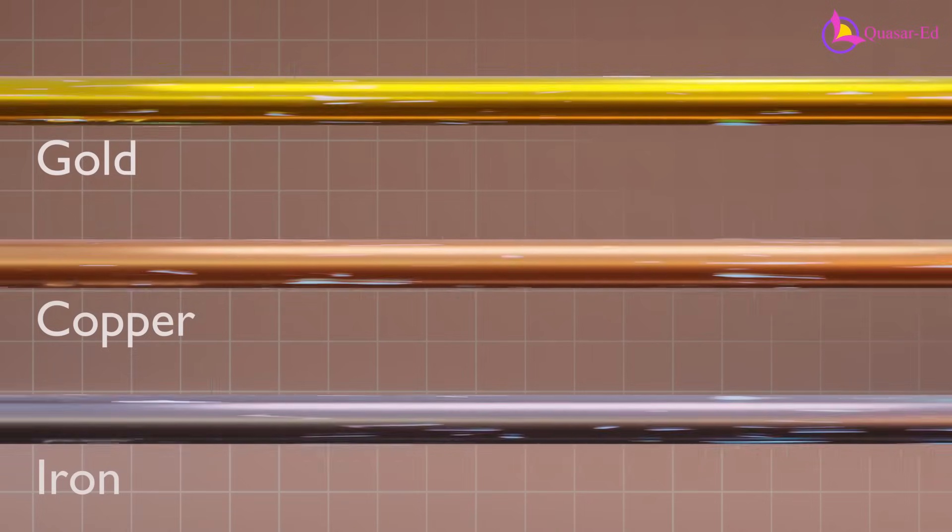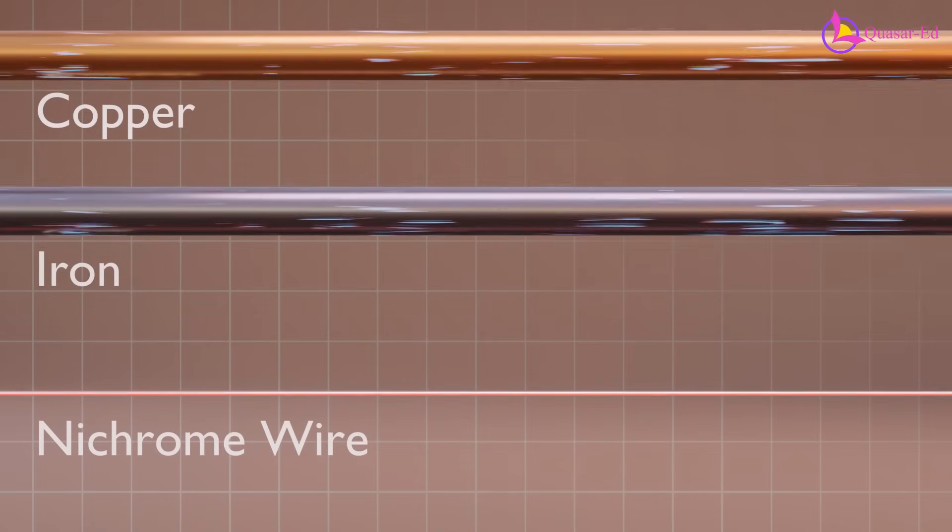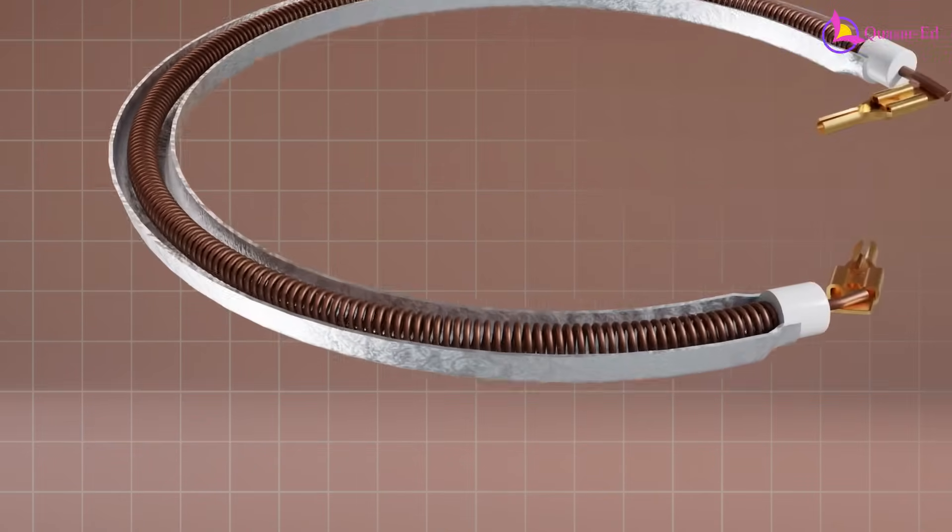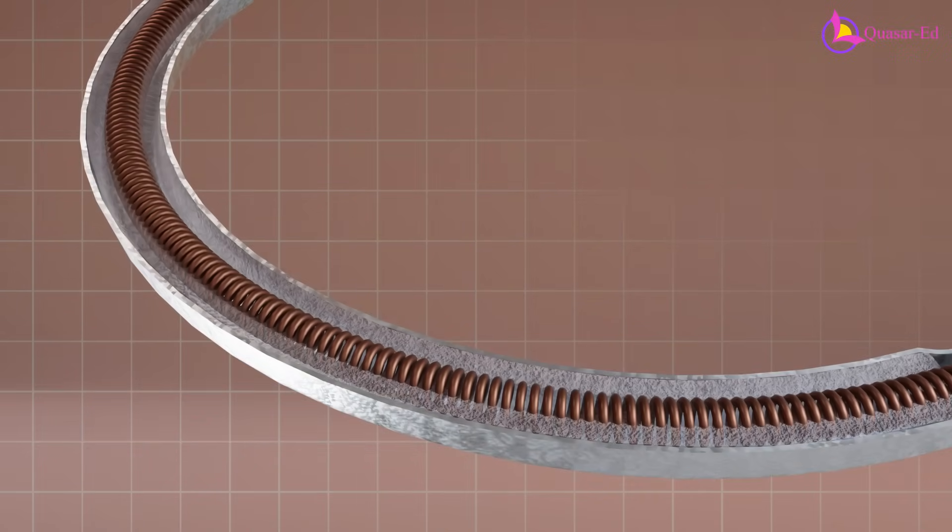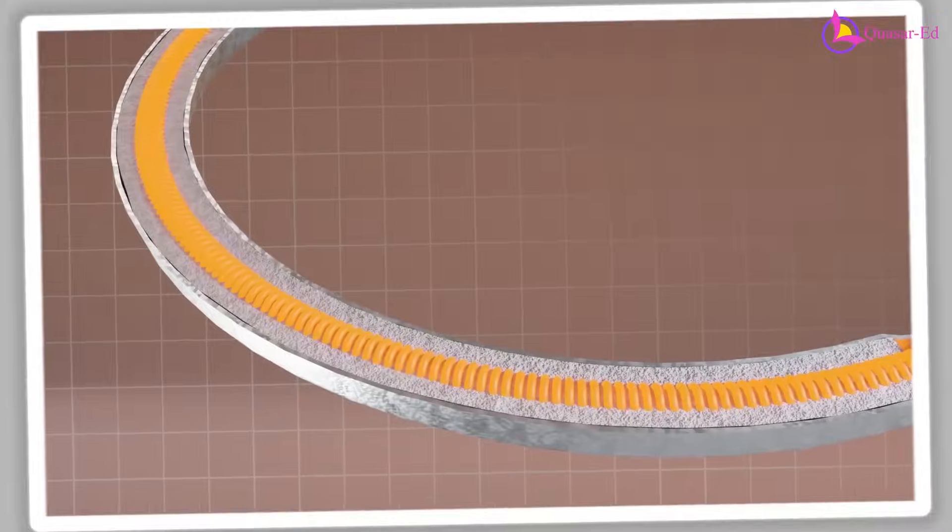While most conductors don't produce visible heat, a high resistance material like nichrome wire does. That's why nichrome is used in electric kettles. It efficiently converts electrical energy into heat.